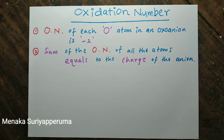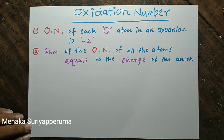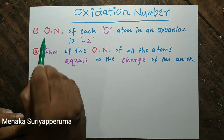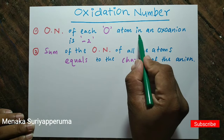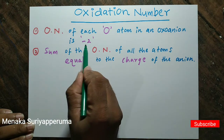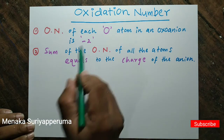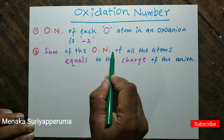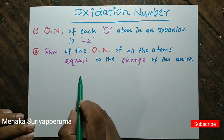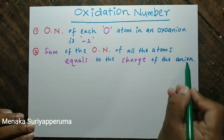Hi students. Today I am going to explain the tips to find the oxidation number of the sulphur atom in sulphate ion. There are two tips. Tip number one: the oxidation number of each oxygen atom in an oxo anion is minus two. Tip number two: the sum of the oxidation numbers of all the atoms equals the charge of the anion.